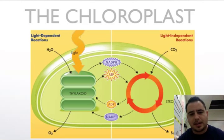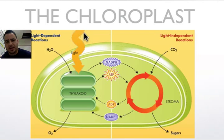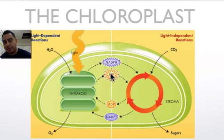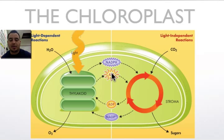Looking at the chloroplast structure again: you have the stroma and the thylakoids. The reactions here are called the light-dependent reactions because light is involved. We use light and water — water donates electrons that are transferred to two molecules, NADPH and ATP. Think of these as batteries that need to be charged. Light hits the thylakoid, splits the water, and the electrons from water charge NADPH and ATP for use in the next reaction.